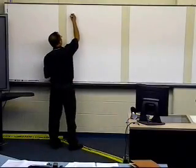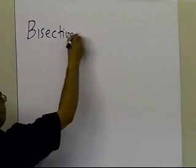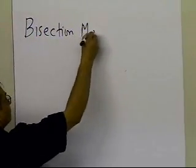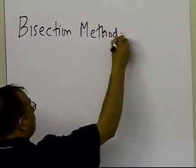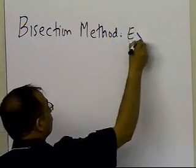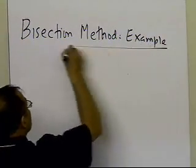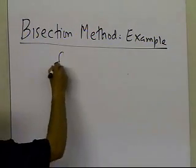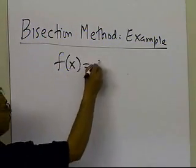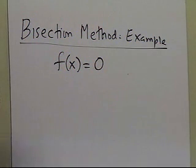In this segment, we're going to take an example of the bisection method. Bisection method is all about finding the root of an equation which is of the form f(x) equal to 0.